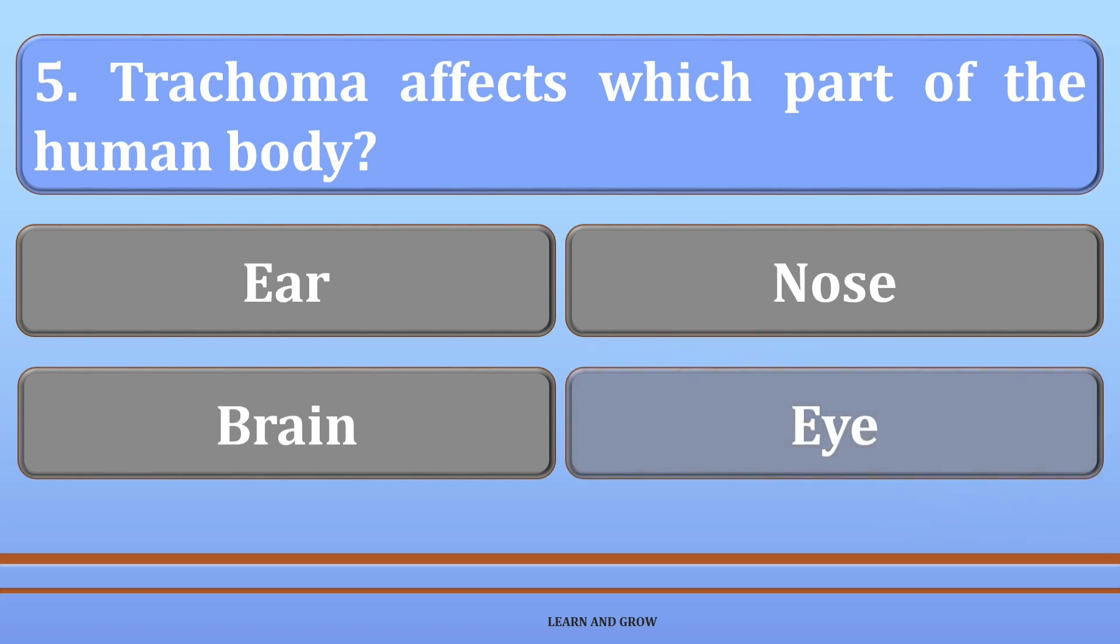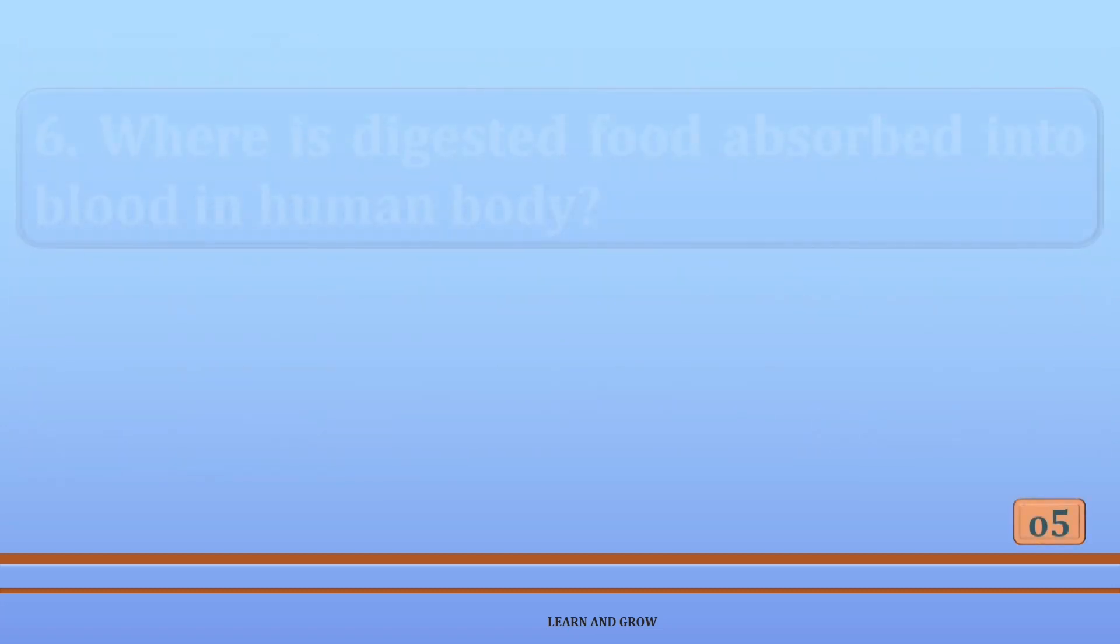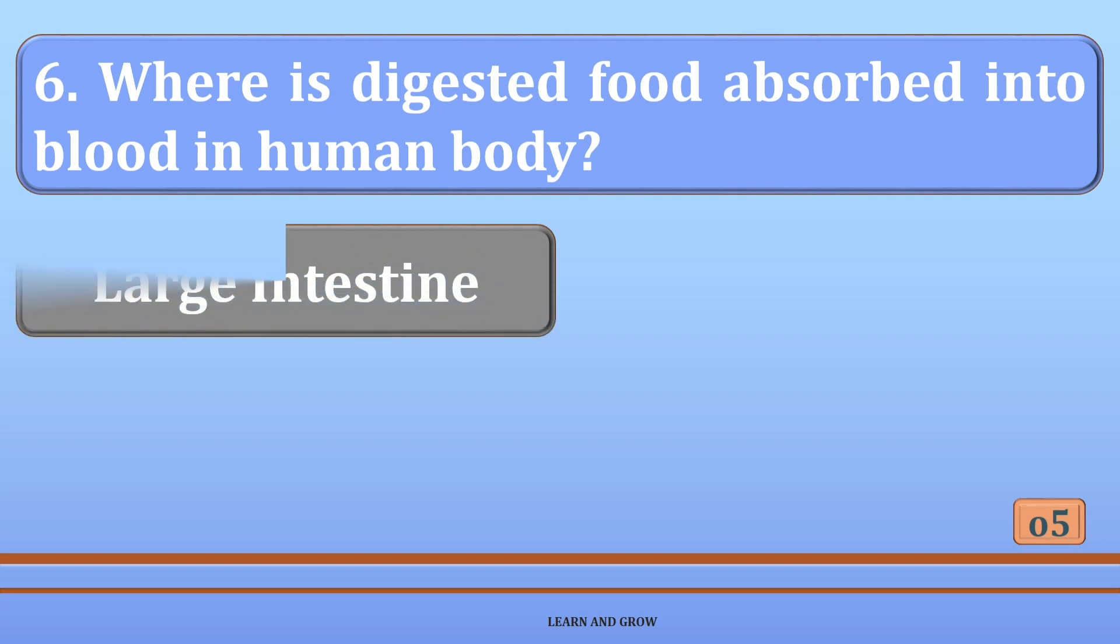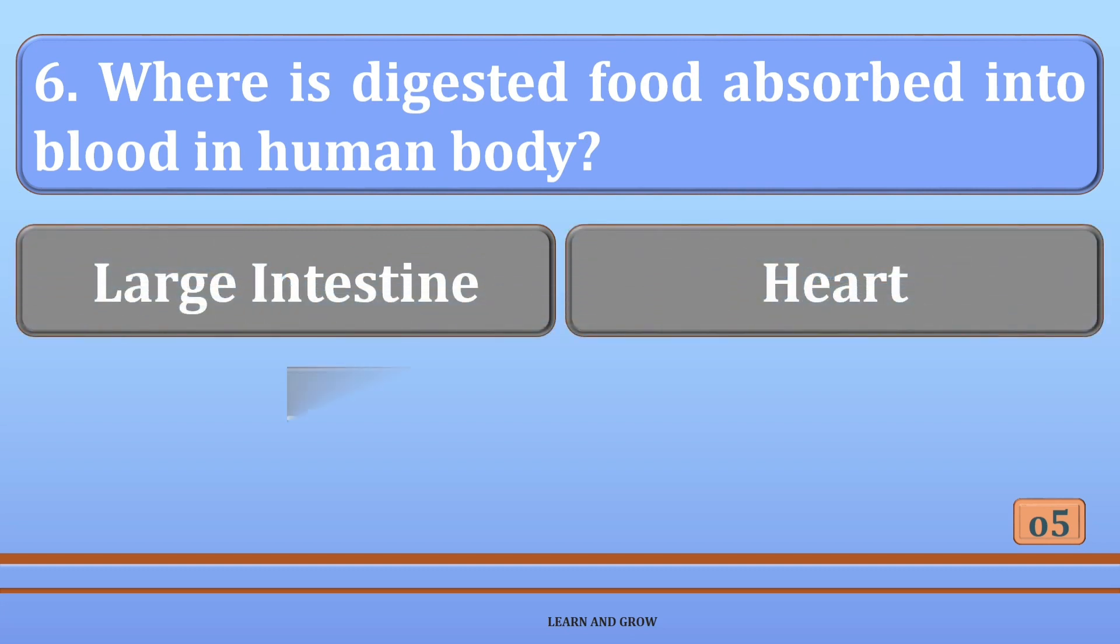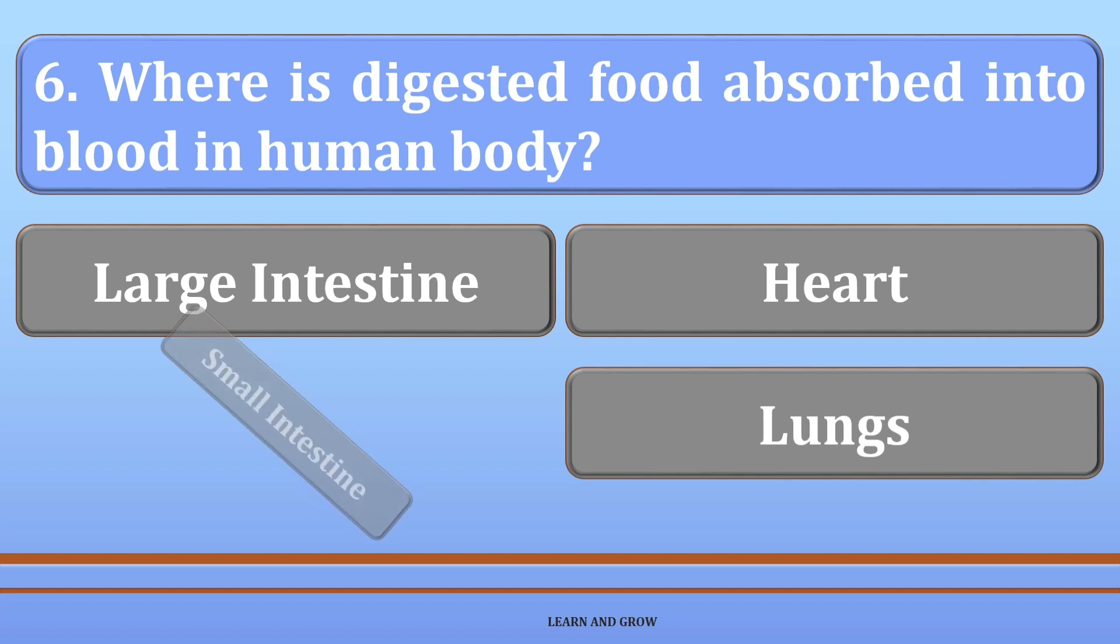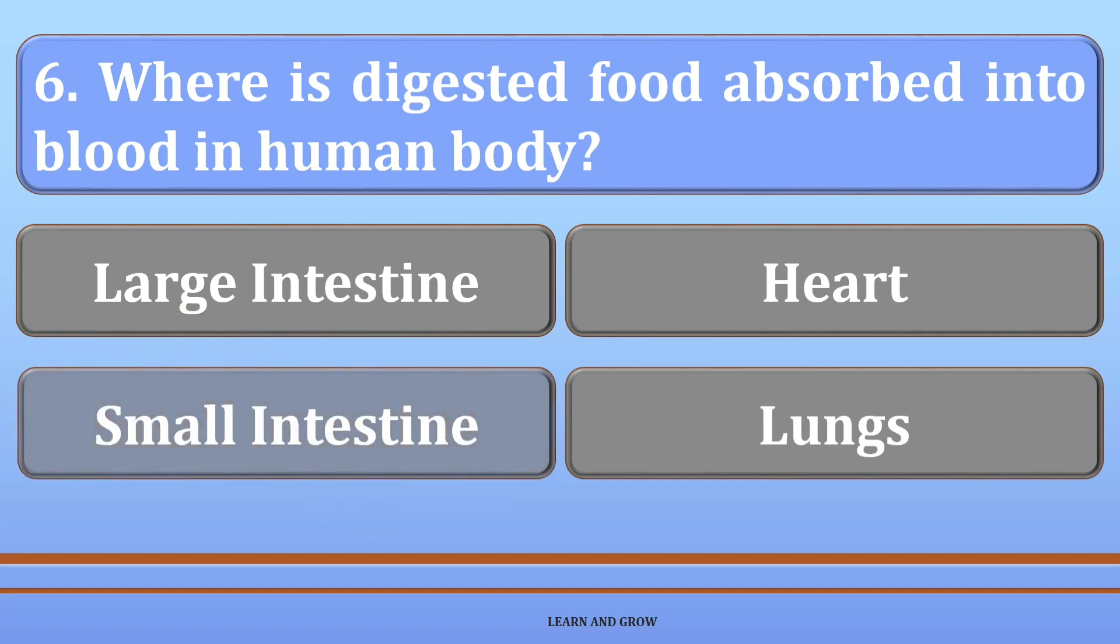Where is digested food absorbed into blood in the human body? Options are: A: large intestine, B: heart, C: small intestine, or D: lungs. The right answer is small intestine.